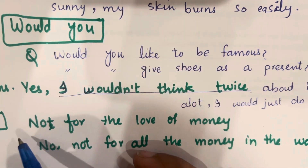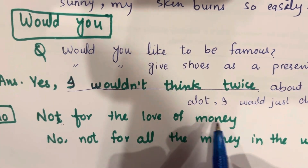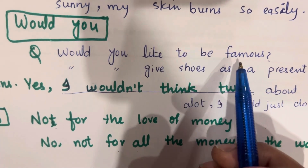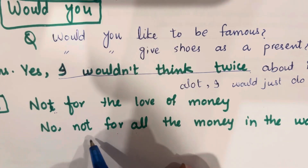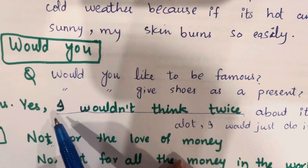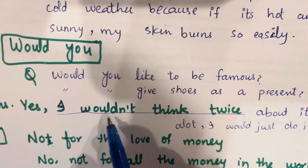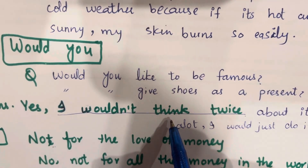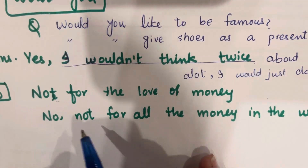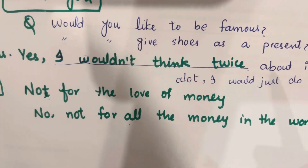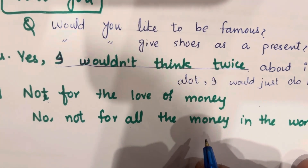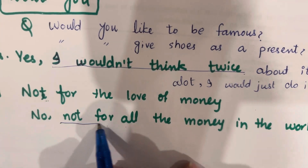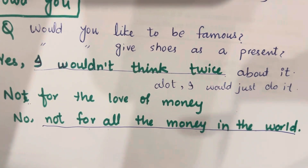If your answer is no, you can say: 'No, not for all the money in the world.' For example, if asked 'would you like to be famous?', you can answer: 'No, not for all the money in the world, because I don't want to be in the limelight.' You have to elaborate your answer and use these phrases in IELTS speaking to get a good band score.